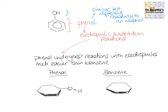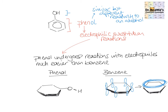To understand why phenol undergoes electrophilic substitution more easily than benzene, we need to look at the pi system in both. I want you to pause the video here and see if you can draw the benzene pi system and how the p orbitals look around this six-membered ring. Around benzene, each carbon has a p orbital, and these p orbitals combine together to form a pi system that is both above and below the ring. It's this source of electron density that means it really wants to attack electrophiles.